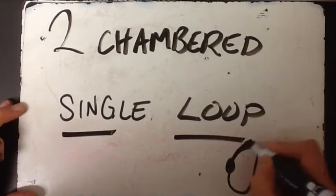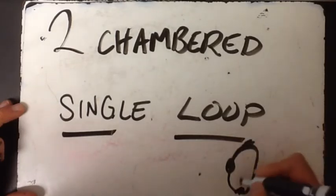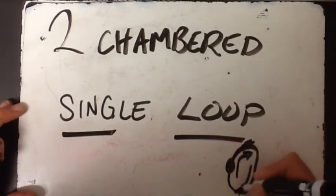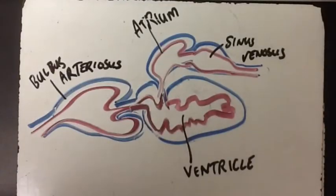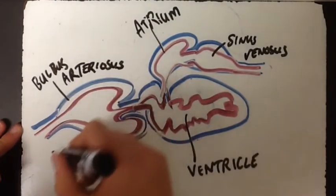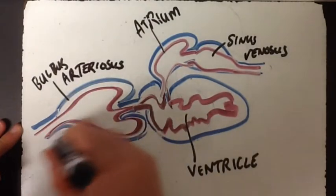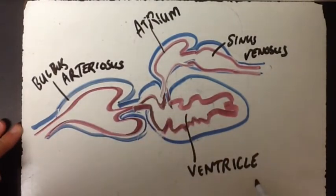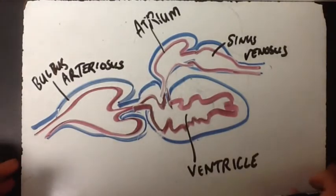Blood collected from throughout the body enters a thin chamber called the atrium. As the heart relaxes, the blood passes through a valve into the thick-walled muscular ventricle. Contraction of the ventricle then forces the blood into the networks where, in the gills, gas exchange occurs. Eventually, the blood returns to the atrium.